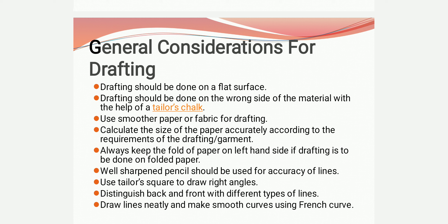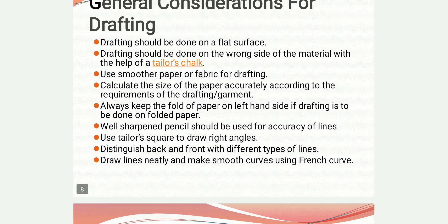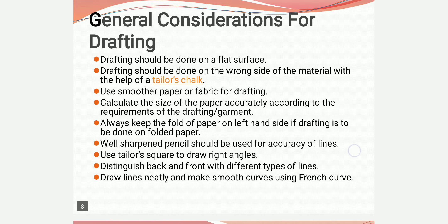General considerations for drafting: Drafting should be done on a flat surface, and on the wrong side of the material with the help of tailor's chalk. Use smooth paper or fabric. Calculate the size of the draft paper accurately according to the requirements of the garment. Always keep the fold of paper on the left-hand side if drafting is done on folded paper. Use a well-sharpened pencil for accuracy. Use a tailor square to draw right angles, distinguish back and front with different types of lines, and draw smooth curves using a French curve.